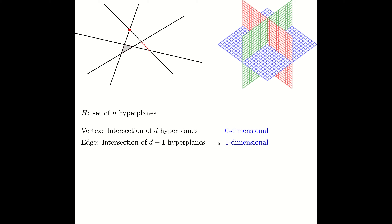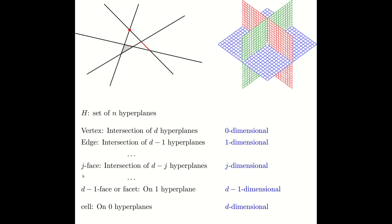An edge is a one-dimensional object. In general, we can have a j-face, which is the intersection of d-j hyperplanes, and it's a j-dimensional object. A vertex is a zero-face, an edge is a one-face, and so on. A d-1 face is called a facet — this is the part of the arrangement that only lies on one hyperplane. So in 2D, a facet will be an edge. However, in 3D, a facet will be a two-dimensional object, because it has d-1 dimensions.